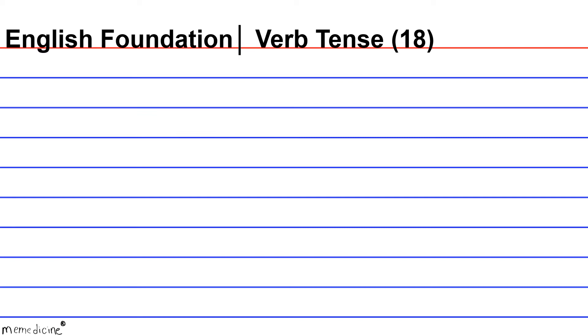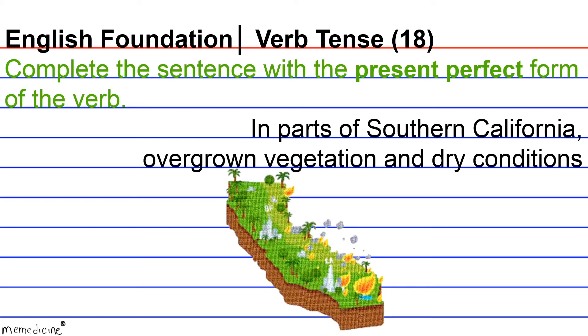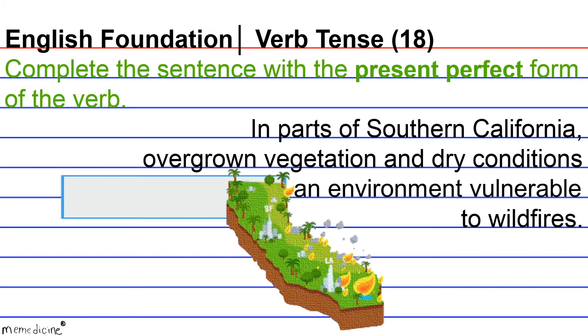English Foundation, verb tense, question 18. Complete the sentence with the present perfect form of the verb. In parts of Southern California, overgrown vegetation and dry conditions blank an environment vulnerable to wildfires. The task here is to shift the tense of create to its present perfect verb form.